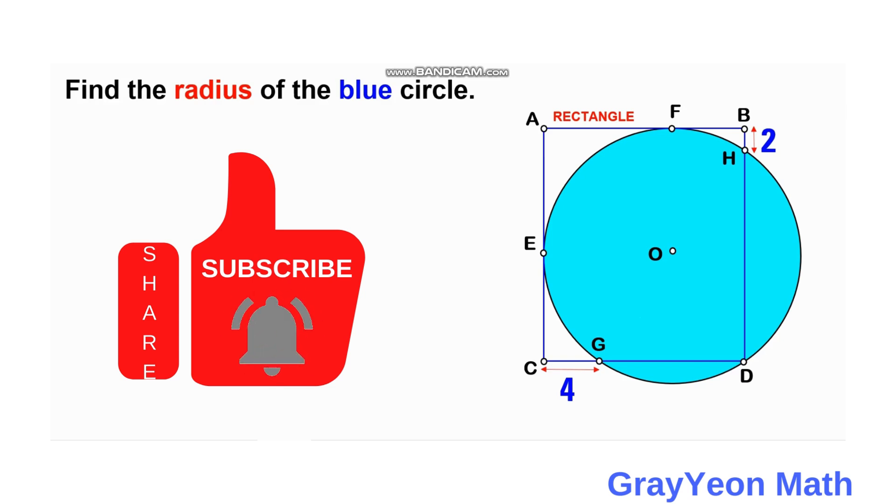Welcome to GrayonMath. We are asked to solve this problem. We have a blue circle and a rectangle that overlap each other, and from the point of intersection at H...